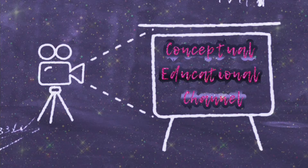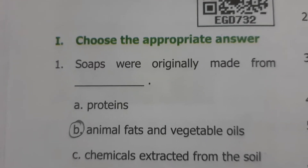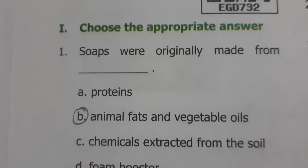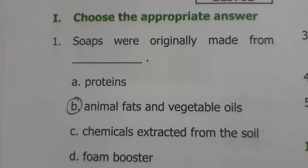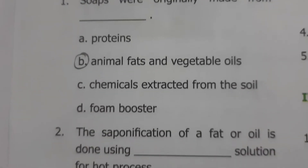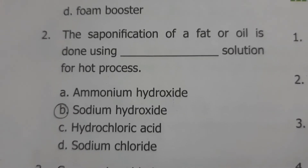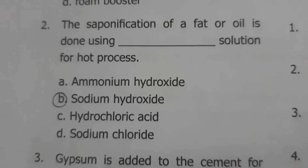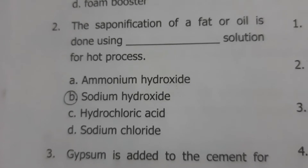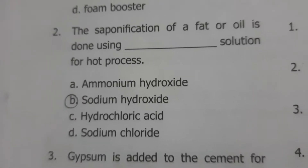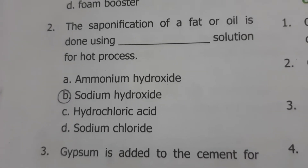Choose the appropriate answer. Soaps were originally made from animal fats and vegetable oils. The saponification of fat or oil is done using sodium hydroxide solution for the hard process.